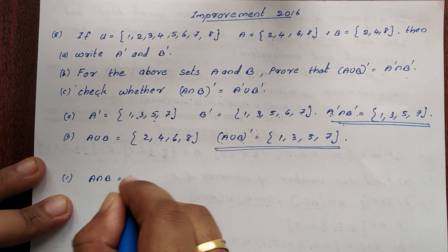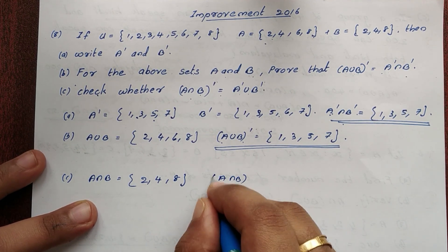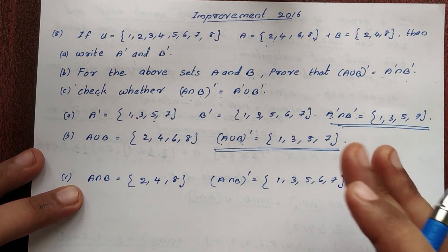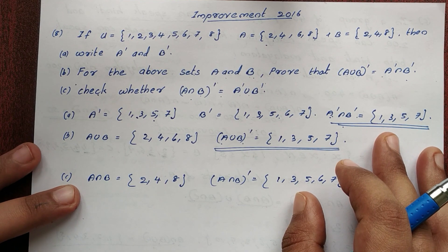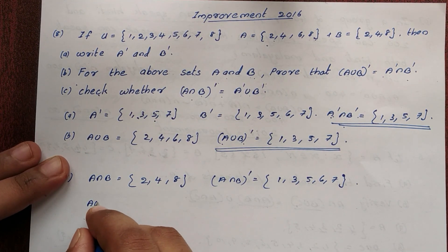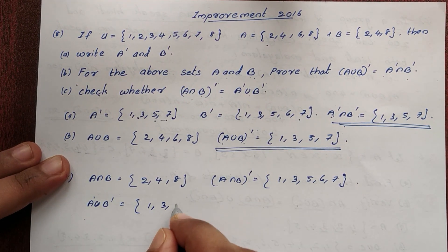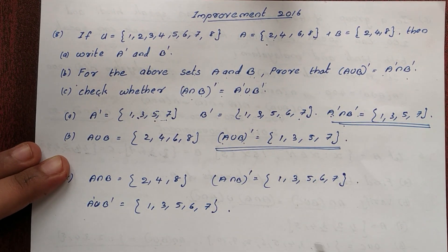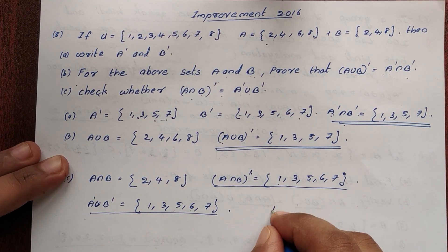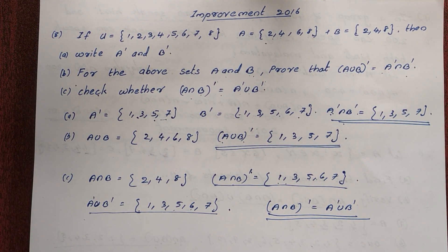Now for the second De Morgan's law: A intersection B = {2,4,8}, so (A intersection B) complement = {1,3,5,6,7}. A complement union B complement = {1,3,5,7} union {1,3,5,6,7} = {1,3,5,6,7}. So (A intersection B) complement equals A complement union B complement. Hence it is true — both De Morgan's laws are verified.